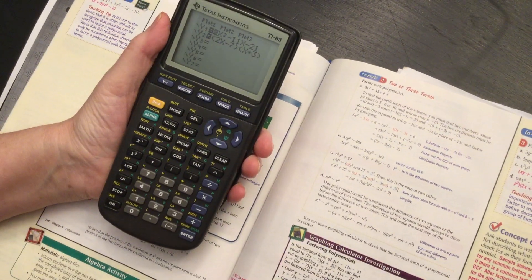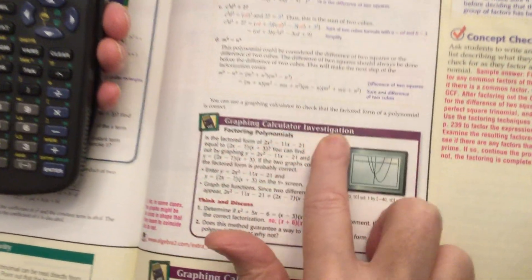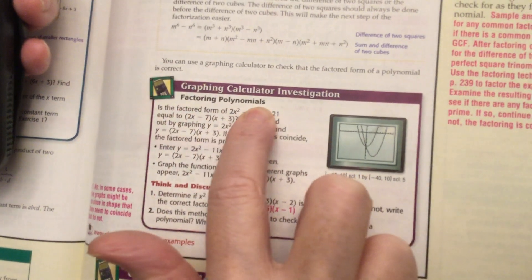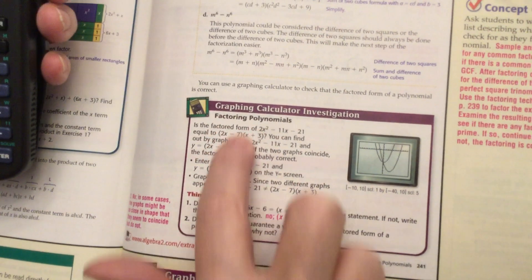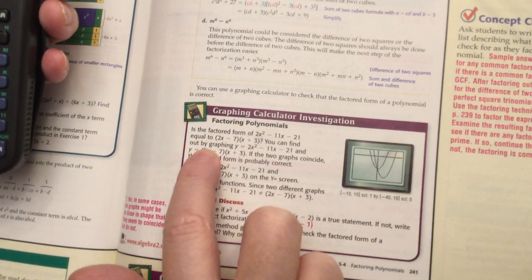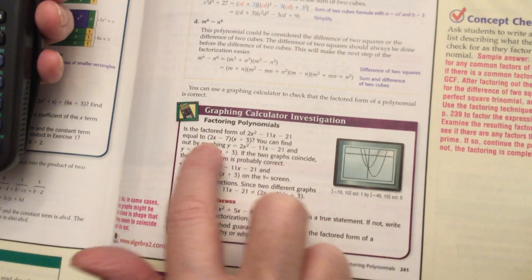Okay, we're on page 241 where it says graphing calculator investigation, factoring polynomials. So what this is, are they equal?